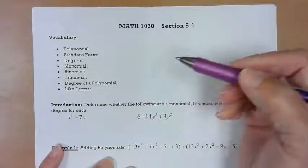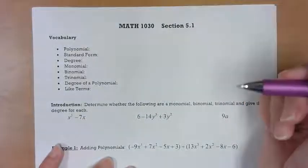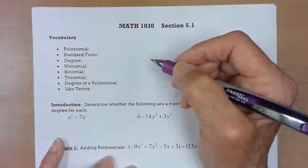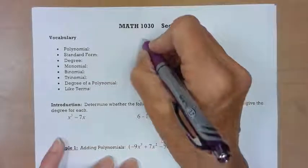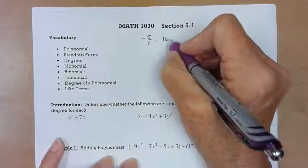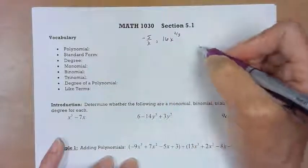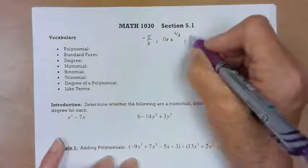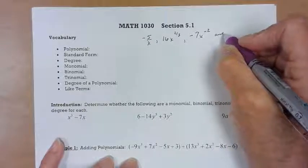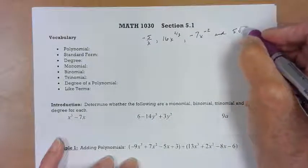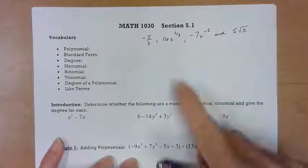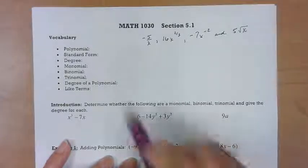First, a polynomial: it's an algebraic expression in which all exponents are counting numbers starting with zero, one, two, three - like you were counting potato chips or something. Now I'm going to give some examples of expressions that are not polynomials: negative 5 over X is not, 16X to the two-thirds - well, two-thirds is not a counting number, negative 7X to the negative 2, and also another example, 5 square root of X - those are not polynomials.